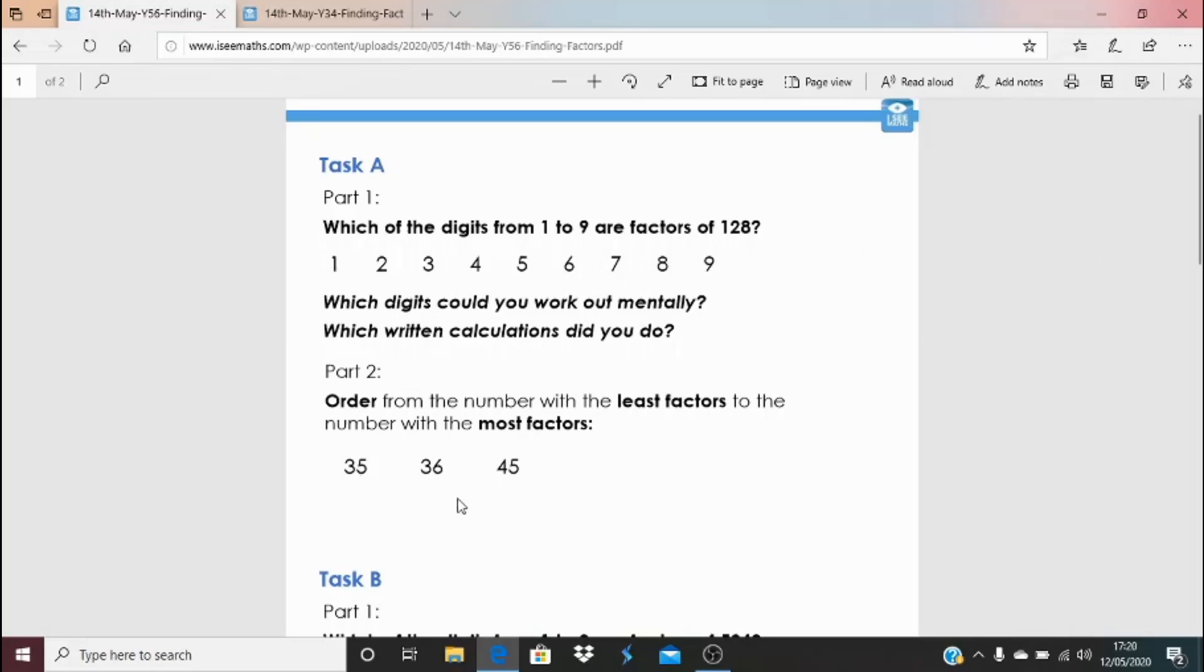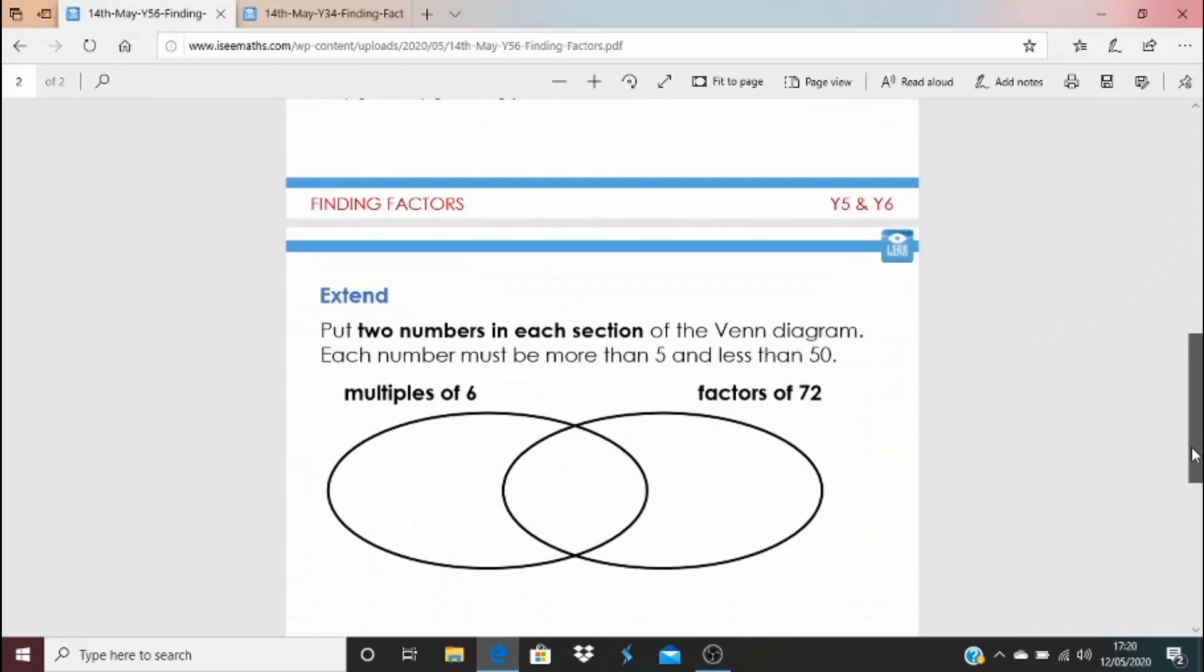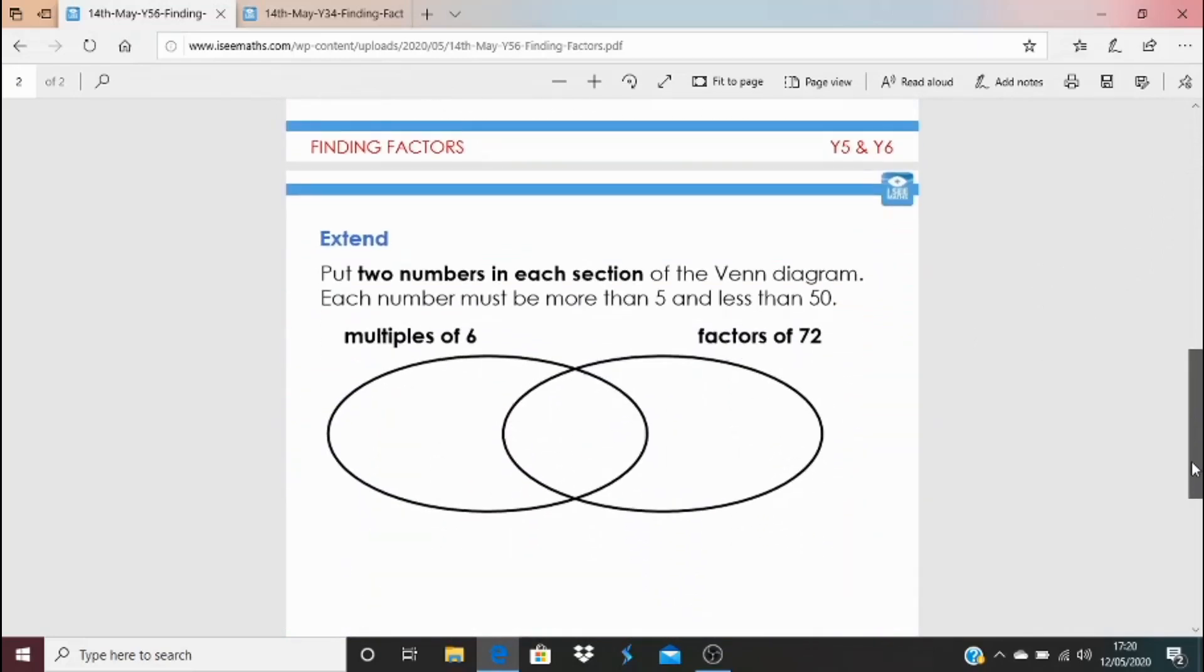Now, part two, have a look at the numbers and think, how can you order them from the one with the least to the most factors? I wonder if you can predict beforehand which one you think will have the most factors and then compare. So again, the setup of task B is similar, but the challenge in the calculation is slightly different. And then the extend task.